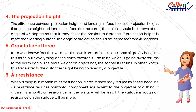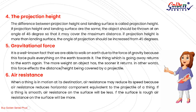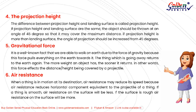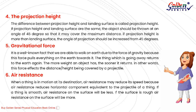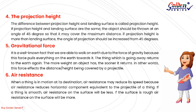4. Projection Height. The difference between projection height and landing surface is called projection height. If projection height and landing surface are at the same level, the object should be thrown at 45 degrees for maximum distance. If projection height is greater than the landing surface, the angle of projection should be increased beyond 45 degrees. 5. Gravitational Force. Gravity pulls everything on earth toward it. The greater the weight of an object, the sooner it returns. This force affects the distance and height covered by a projectile.